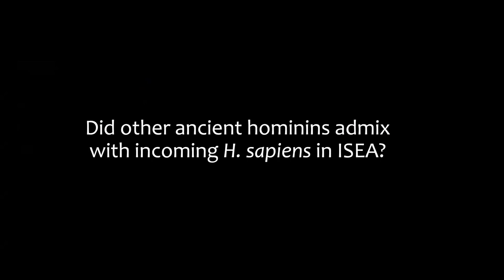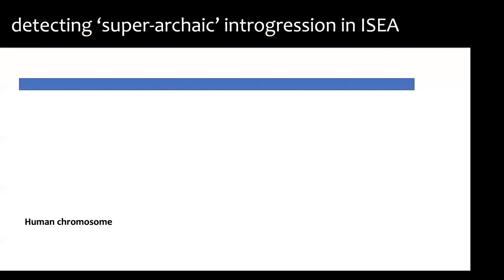Denisovans are thought to have split from modern humans between 500,000 and 700,000 years ago, whereas the island Southeast Asian groups are thought to represent much older splits based on morphological comparisons and dating. They may be too early to be Denisovans. But we don't know their DNA — we have no DNA evidence for these groups. Our question was: is it possible to look in modern human genomes for signatures compatible with mixture events with deeply divergent lineages?